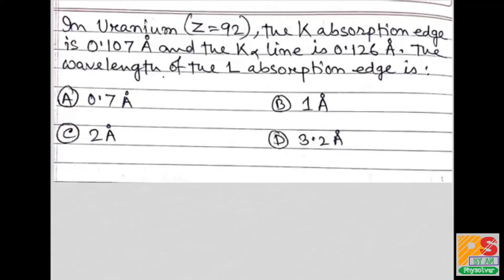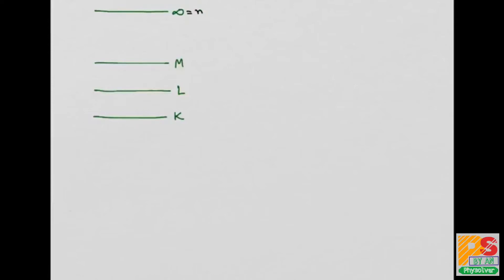To solve this question we need to understand what the K absorption edge line, K alpha line, and L absorption edge line actually mean. This is the ground state whose principal quantum number is 1, and states are denoted by K, L, M and so on up to infinity. The K absorption line means transition from n equals infinity to n equals 1.